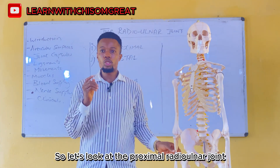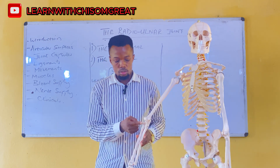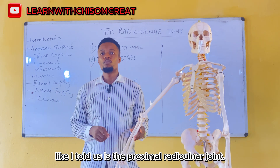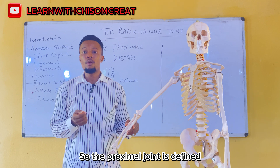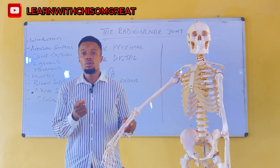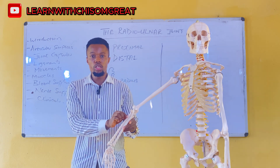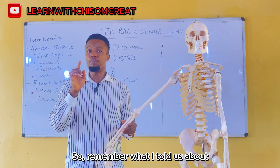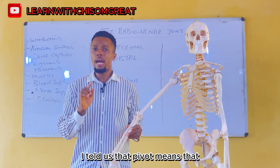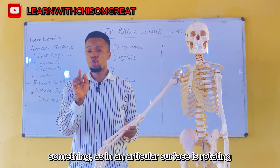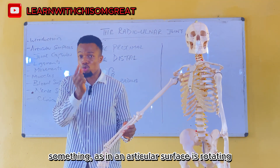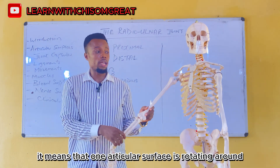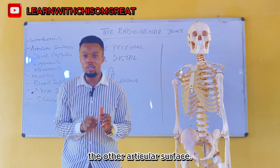The proximal radioulnar joint is defined as a pivot type of synovial joint that is formed between the radius and the ulna at the upper part. Remember, pivot means that one articular surface is rotating around the other articular surface.